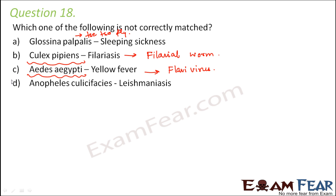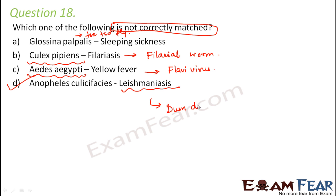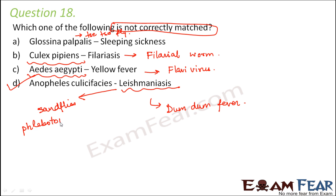So we are left with option D, which is the correct answer since the question asks which is not correctly matched. Leishmaniasis, also known as dum-dum fever, spreads by the bite of certain types of sand flies — not mosquitoes. The carriers for leishmaniasis are sand flies such as Phlebotomus. Anopheles refers to a species of mosquito, so mosquitoes are not the carriers for leishmaniasis.